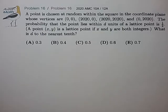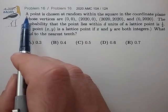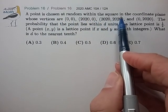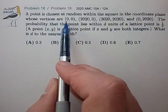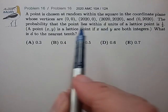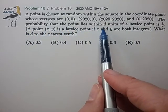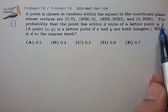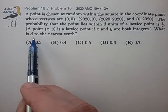Hi, this is problem 16 from the 2020 AMC 10A. A point is chosen at random within the square in the coordinate plane whose vertices are given. The probability that a point lies within d units of a lattice point is one half. What is d to the nearest tenth?